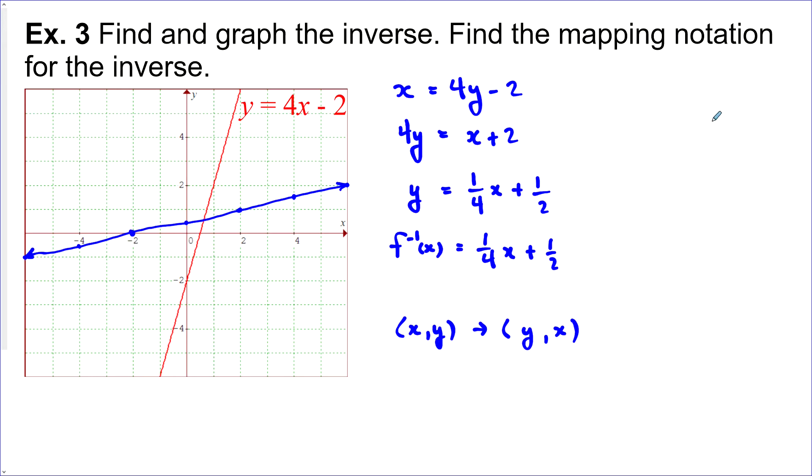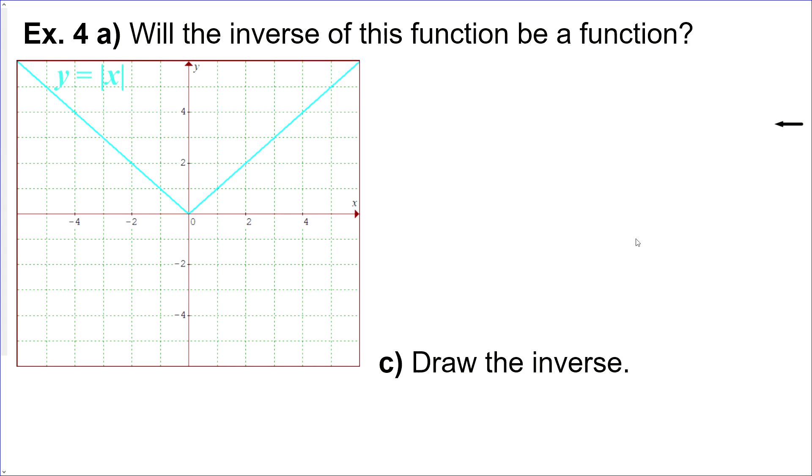Will the inverse of this function be a function? So if we look at the horizontal line test and draw a horizontal line randomly anywhere here, anywhere except the vertex, we're going to hit this function twice. So no, it fails the horizontal line test.